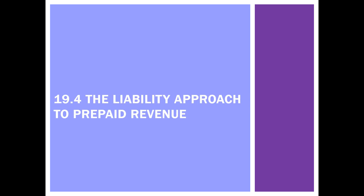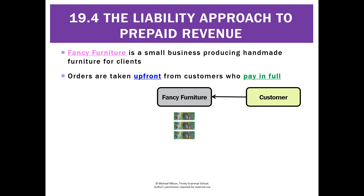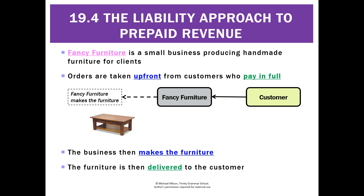Now we know what prepaid revenue is, let's look at how we treat it. Let's pretend we're a business called Fancy Furniture and we make handmade furniture for clients. What happens is customers give us their money up front — a prepaid for a table, for example — and then we'll go away and make it. Eventually, once we've made it, we'll give it to the customer. So there's going to be a bit of time where we've got the customer's money but we haven't given them a table.